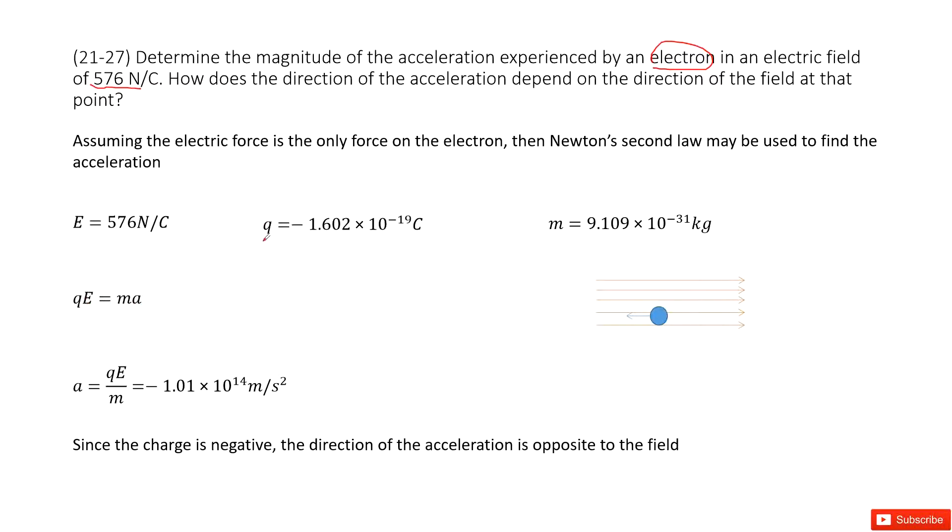So Q is given. It tells us it is an electron that is carrying one negative charge. And the electric field is given. Now you can check your textbook. It is the mass of the electron. Write it down. In this way, you can get the acceleration.